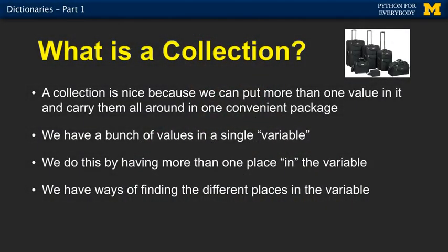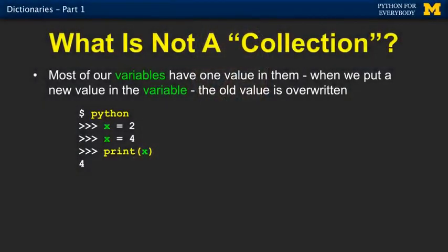The basic definition of a collection is more than one thing in a single variable, and a way of indexing and looking up and manipulating things in that single variable. To review, most of our variables have one value in them. When we put a new value in the variable, the old value is overwritten. So x equals 2, x equals 4, and we implicitly know that now it has a 4 in it, but the 2 is long gone. It's been overwritten.